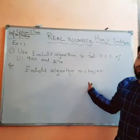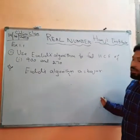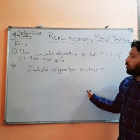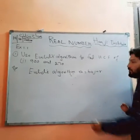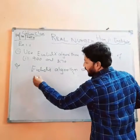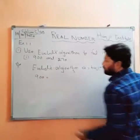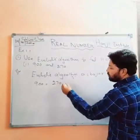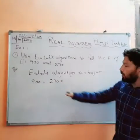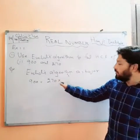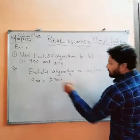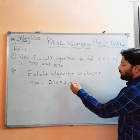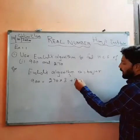If you substitute the values of 900 and 270 in this equation, you can solve this HCF question easily. Here we have 900 in place of A and 270 in place of B. We have to multiply with a number that will divide this number — if you multiply 270 with 3, you will get a remainder of 90.